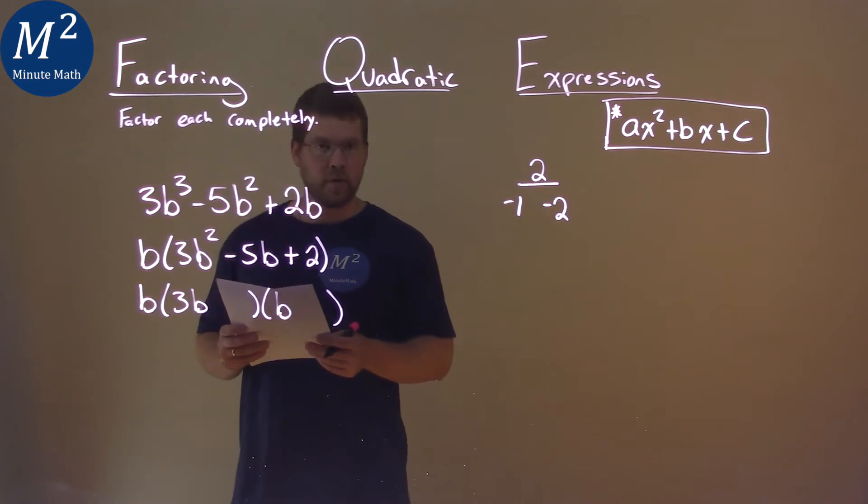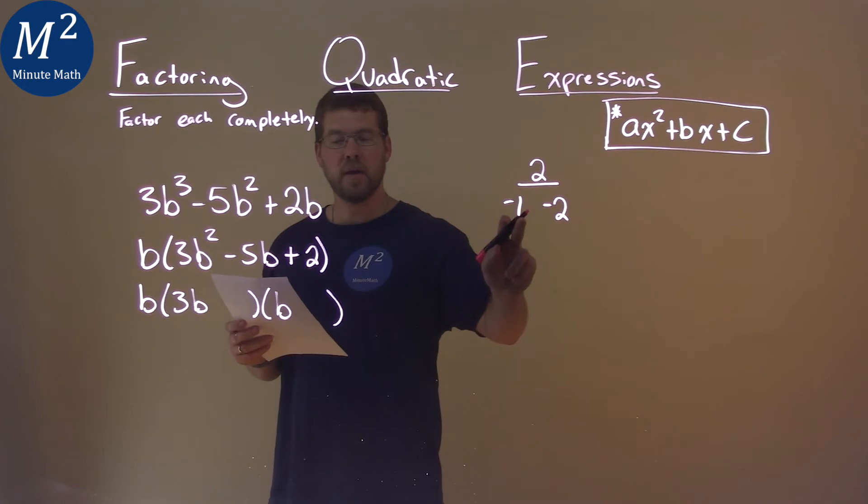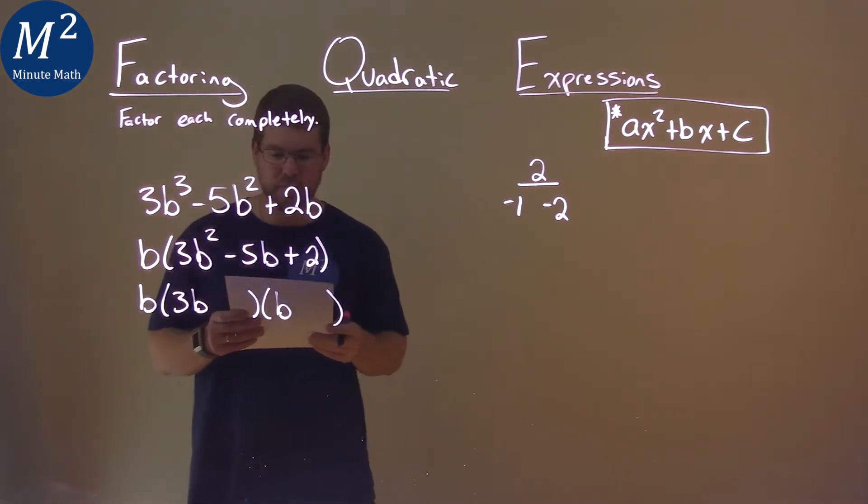So now, here's the fun part. 3 times which one of these numbers plus the other one gets us a negative 5?